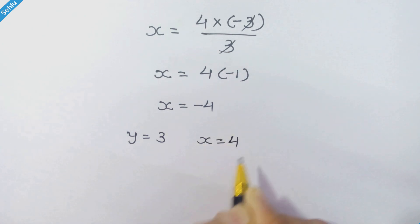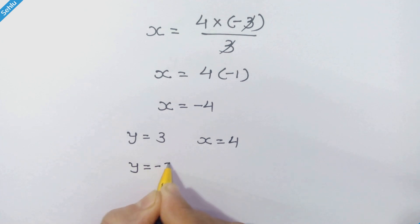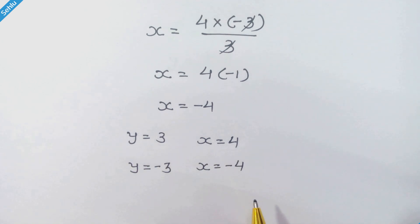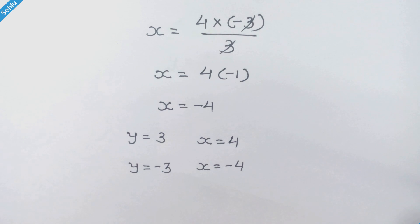So the answers are: when y is equal to 3, x is equal to 4; and when y is equal to minus 3, x is equal to minus 4. This is the solution to our given equation. That's it — thanks for watching, I will see you in the next one, and don't forget to subscribe. Bye bye!